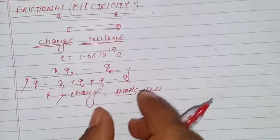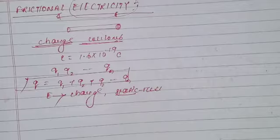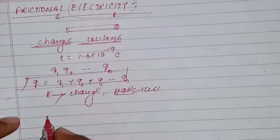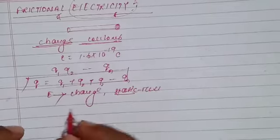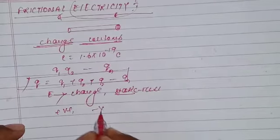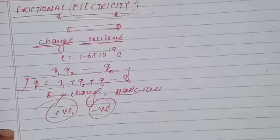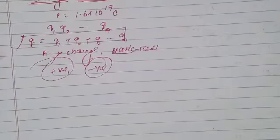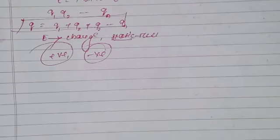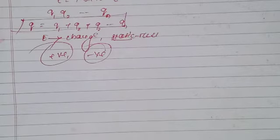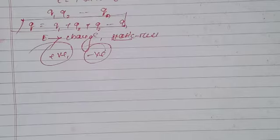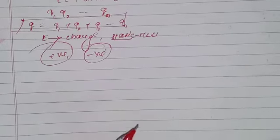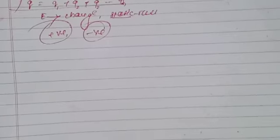The next topic is the different types of charges. There are two types of charges: positive and negative. To prove this, we can look at experiments done by the scientist Charles Dufay of France, who showed that electric charges on various objects are of only two kinds.